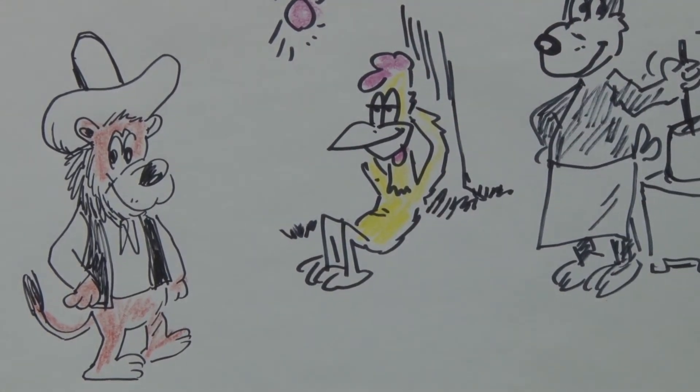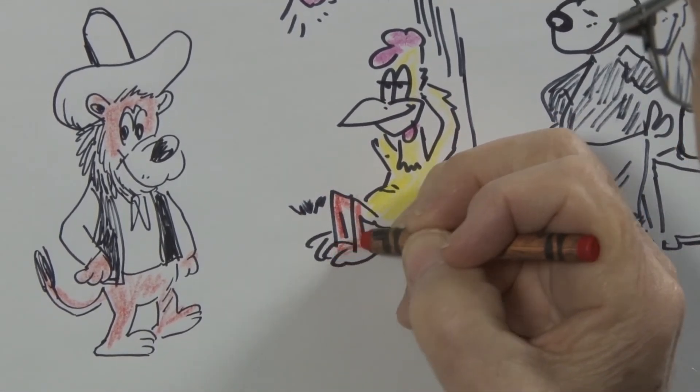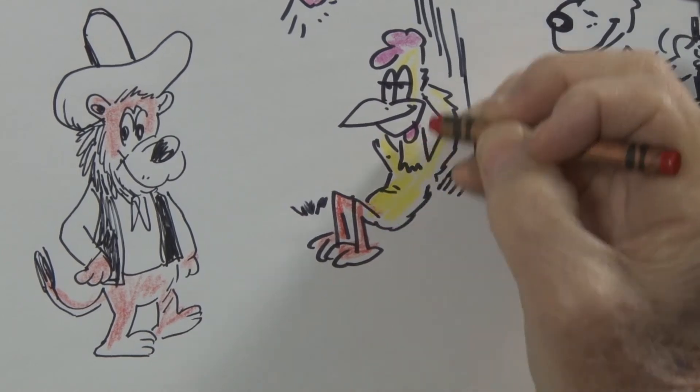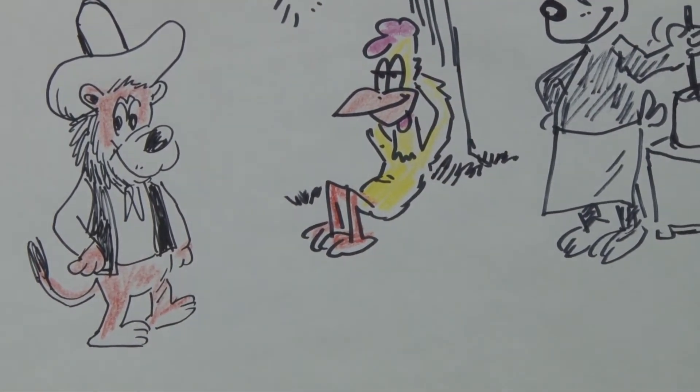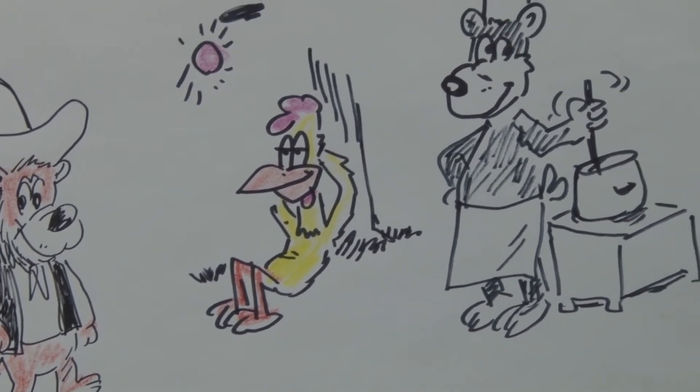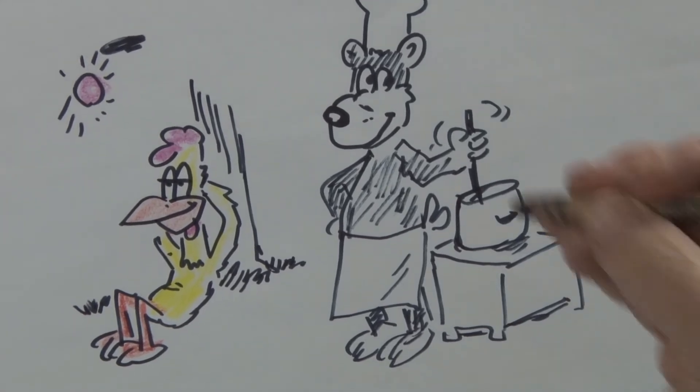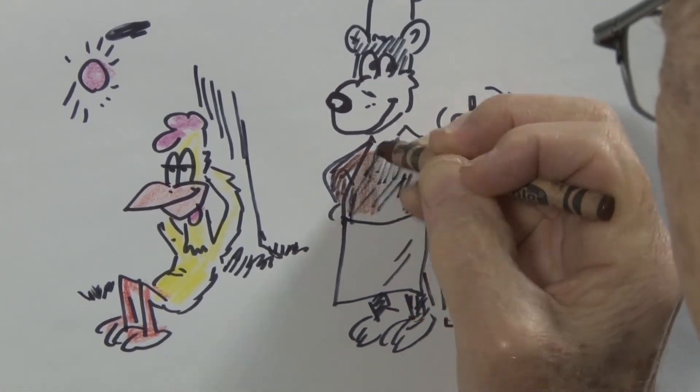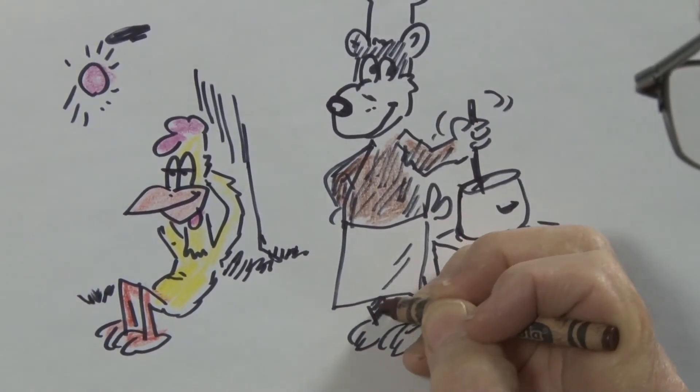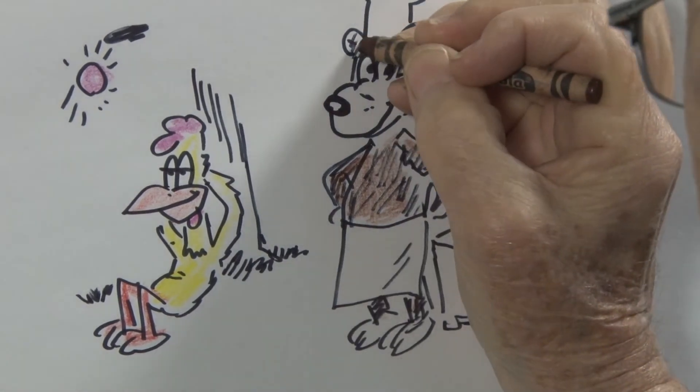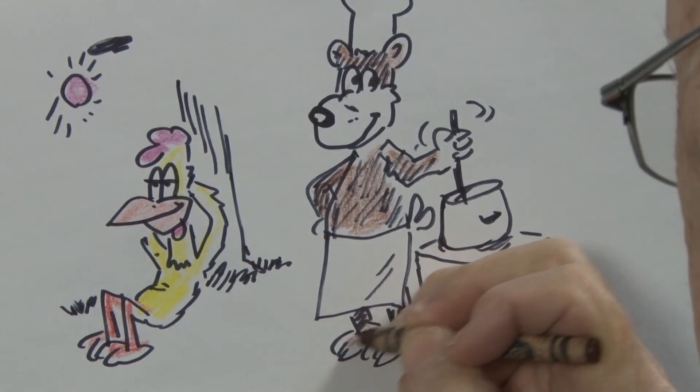And give our rooster yellow feathers and head. And then give him some orange-looking legs and feet and a sort of light orange beak. Now our bear is going to be a brown bear. By the way, those little crisscross lines I put on the bear, that's just supposed to show that he's a fur-bearing critter.